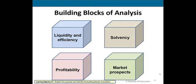We have liquidity and efficiency, the ability to meet short-term obligations and to effectively generate revenues. Solvency is the ability to generate future revenues and meet long-term goals. Profitability is the ability to provide financial rewards sufficient to attract and retain financing. Lastly, we have market prospects, the ability to generate positive market expectation.